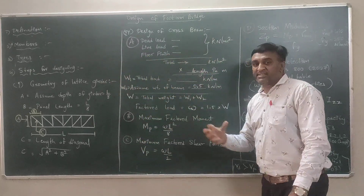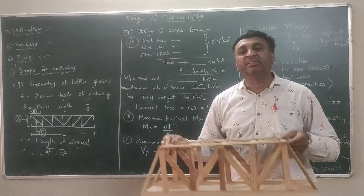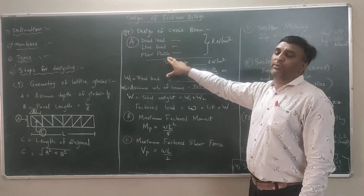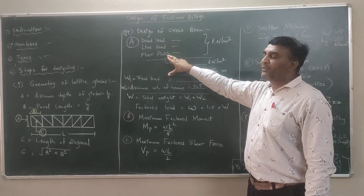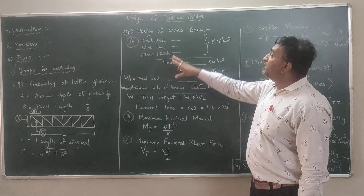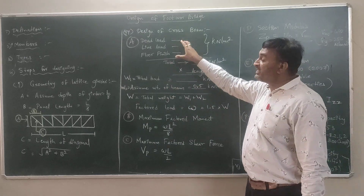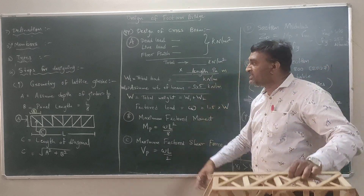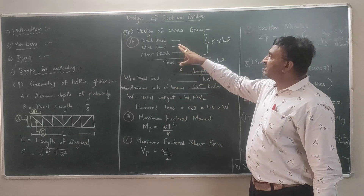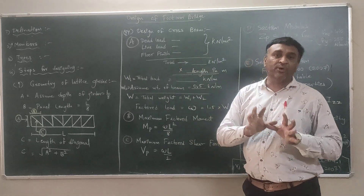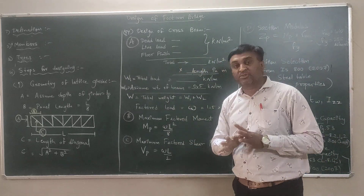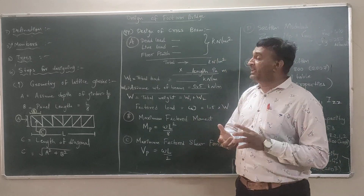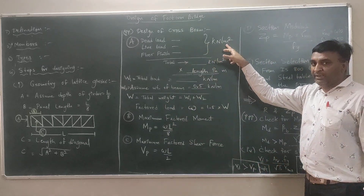Step 2 is to determine how much load will come on this truss or foot over bridge. We consider dead load, live load, and floor finish. The live load and floor finish are generally given in the exam. If the dead load is not given, it is defined by the thickness of the slab multiplied by the density of concrete, which is 25 kN/m³.